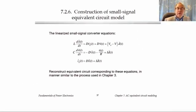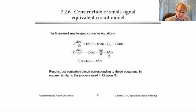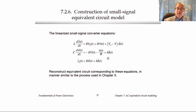In the previous lecture, we perturbed and linearized the converter equations, and we derived this set of three small signal equations for the buck-boost converter. We're now in a position to construct an equivalent circuit model for the converter. The process for doing this is very similar to the way we've been constructing the DC equivalent circuit models — we just have some different terms now.